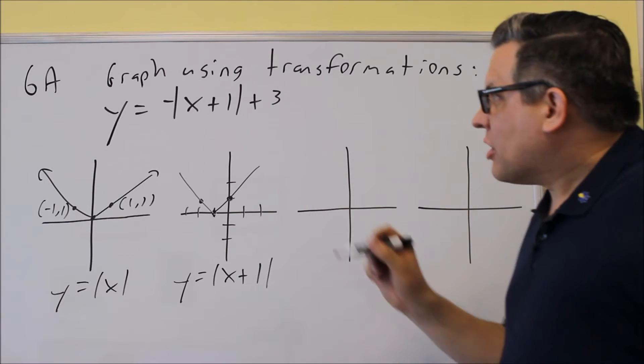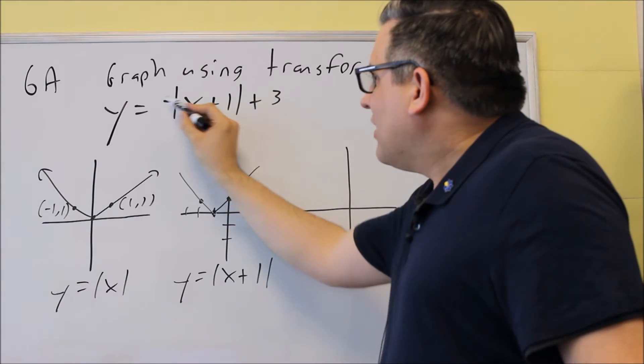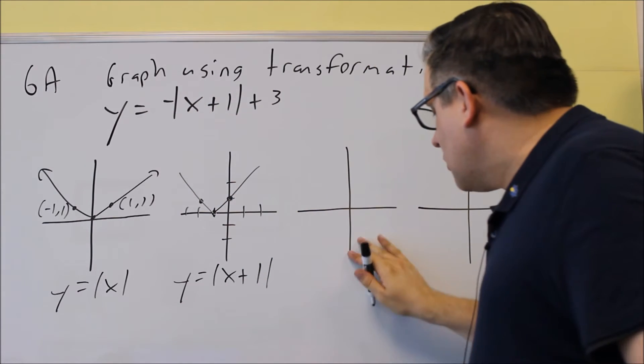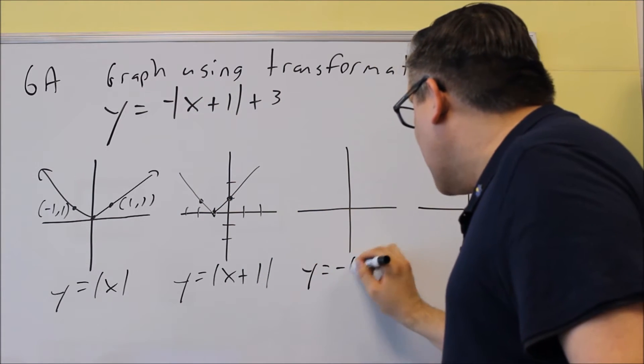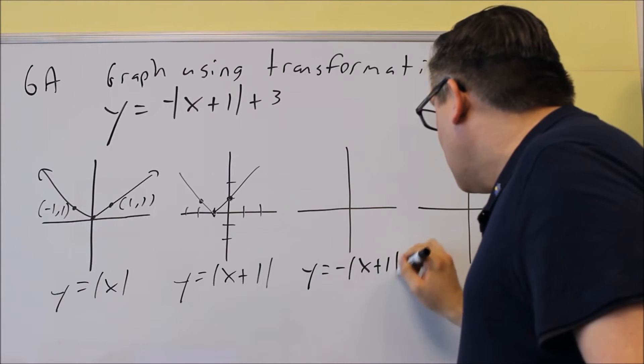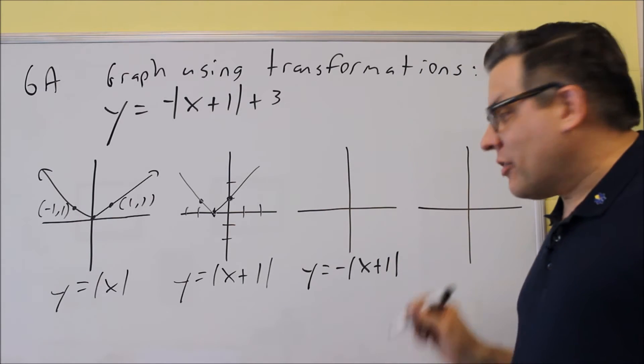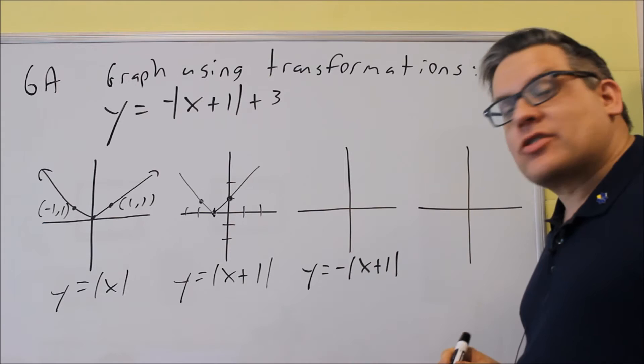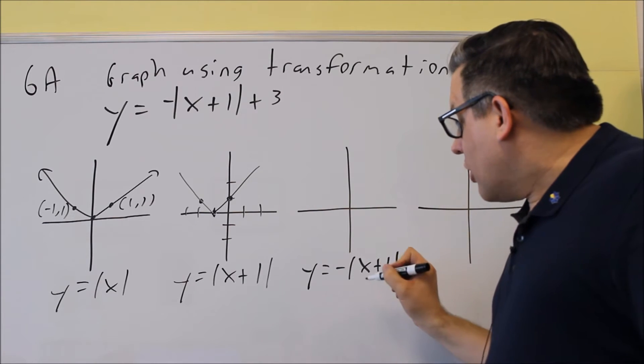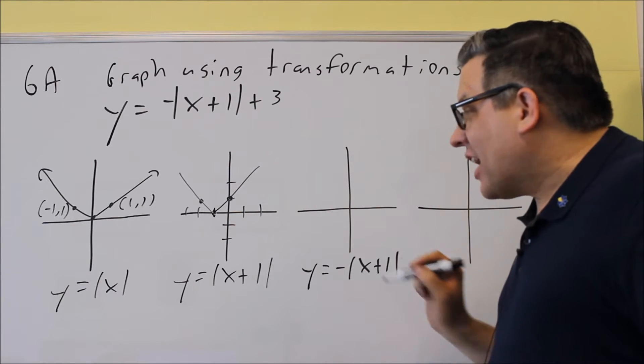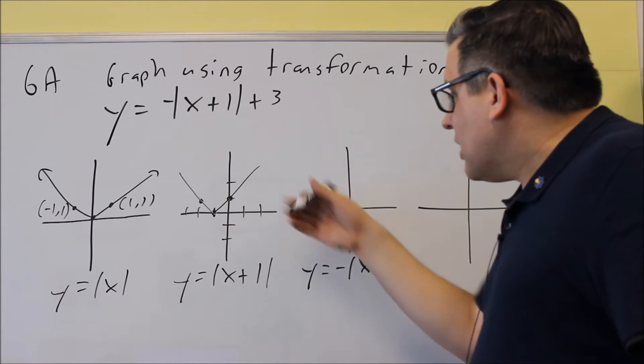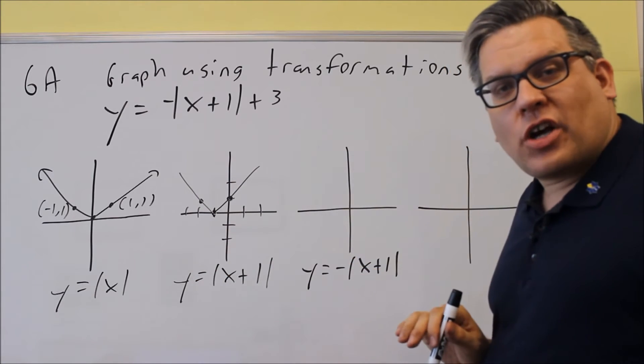Now the next thing I'm going to do is apply the negative sign out front. So I'm now going to do negative absolute value of x plus 1. And then the last step, I'll add 3 and that's going to be my final answer. So for this, I'm going to apply the negative. Now negative sign means that you're going to take this graph and flip it upside down.